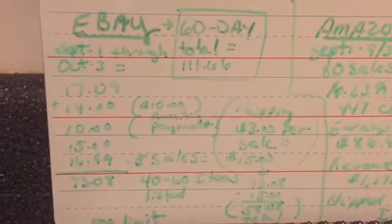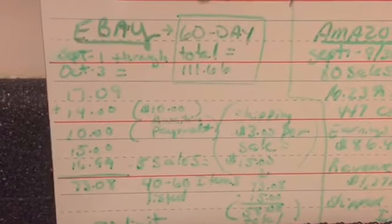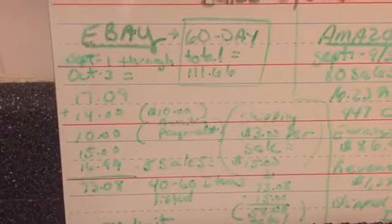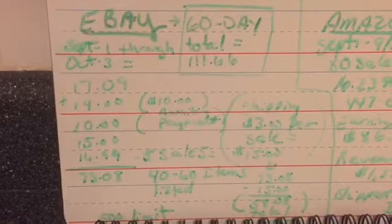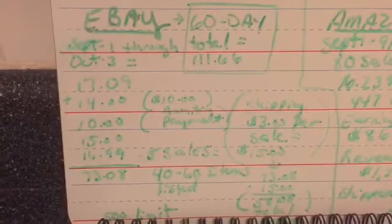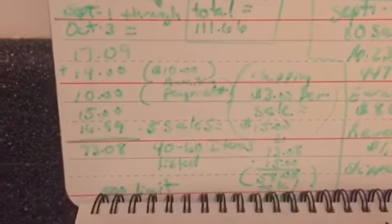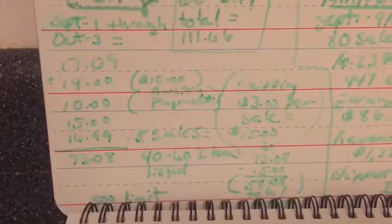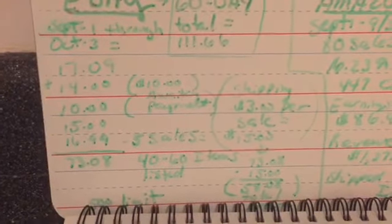From September 1st through October 3rd, I did $73.08. That's only with five sales, really six, but one didn't pay, hasn't paid yet.